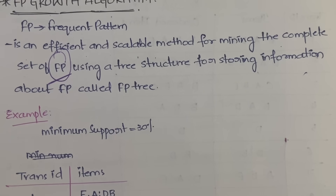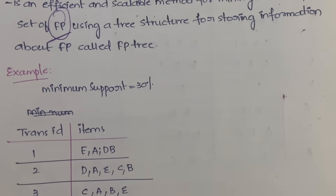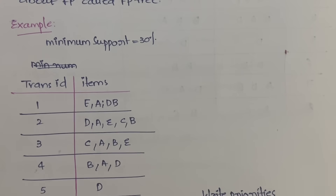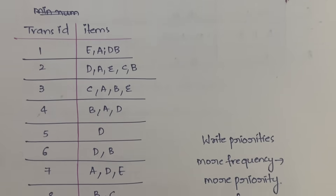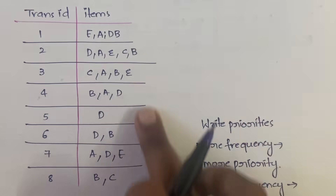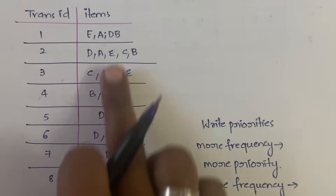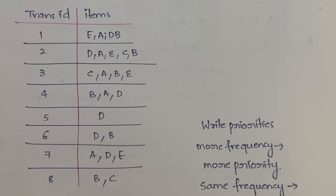Now we have an example. In the example we have taken minimum support as 30%. We have transactions and items. Same as the Apriori algorithm, first we have to list out the individual items and for each individual item we have to find out the frequency, and then give the priorities. How to give the priorities I'll tell you later.